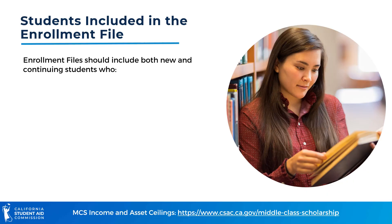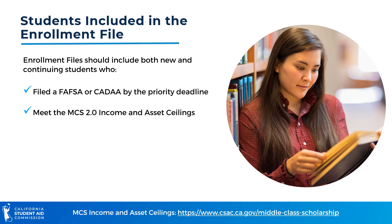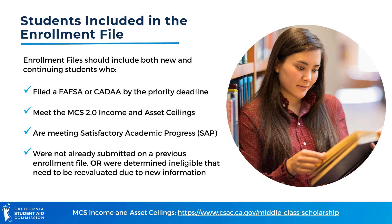Campuses should include the following students in their enrollment files to be considered for an MCS award: students who filed their FAFSA or CADAA by the priority deadline, meet the MCS 2.0 income and asset ceilings, and are meeting satisfactory academic progress standards. Students should only be included in the enrollment file if they were not already submitted on a previous enrollment file, or were initially determined as ineligible but need to be re-evaluated due to new information.